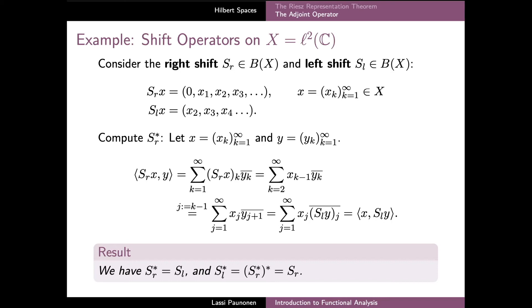If we additionally want to compute the adjoint of the left shift operator, we can use the property that the adjoint of the adjoint of an operator is the operator itself, to see that the adjoint of S_L is precisely the right shift operator.